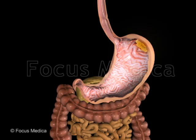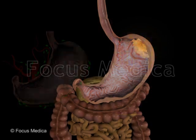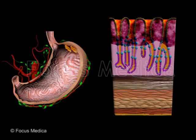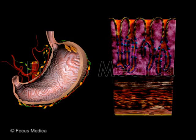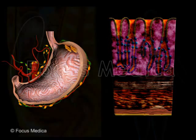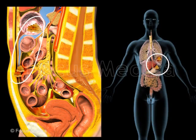Diffuse-type adenocarcinoma is the less commonly observed, highly metastatic form of gastric cancer, involving rapid disease progression and poor prognosis. It invades the muscularis propria and lymphatic system, disseminating frequently to the peritoneum and lungs.